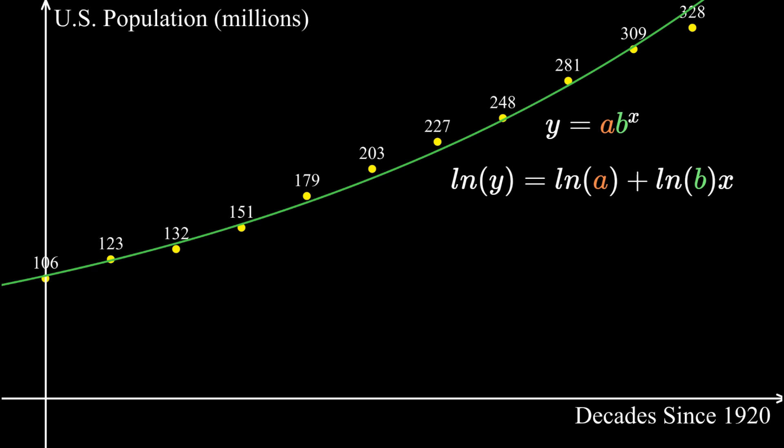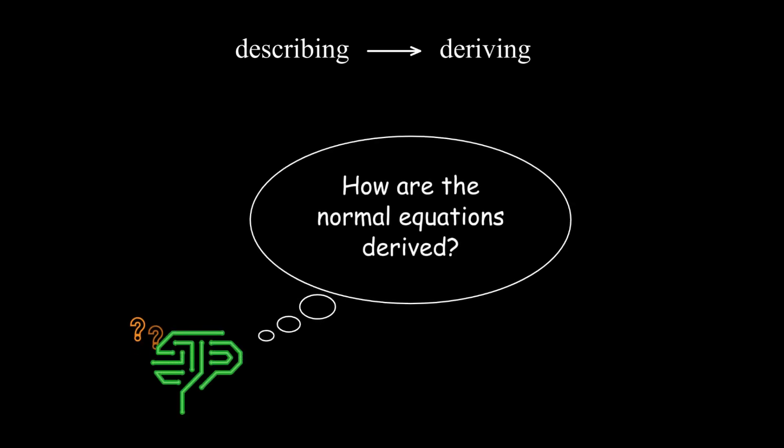Okay, by now we've seen how to compute the coefficients in any sort of regression problem. And next, we are arriving at the transition in the series, from describing to deriving. Why does this formula work? How is it actually derived?